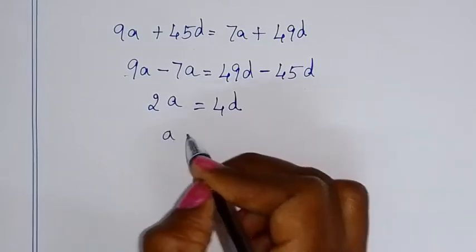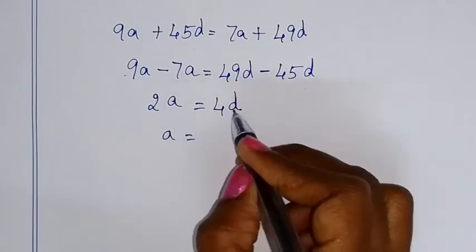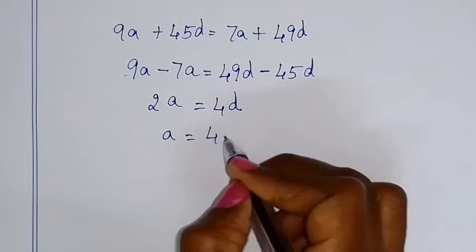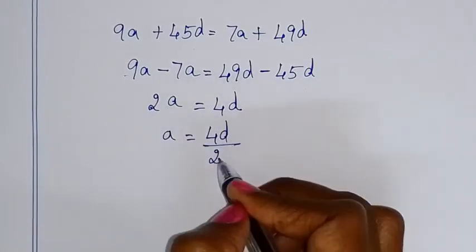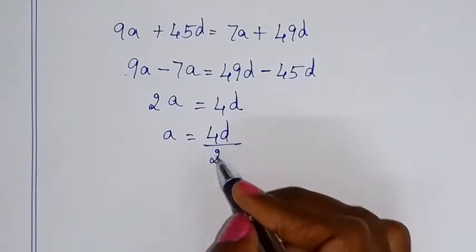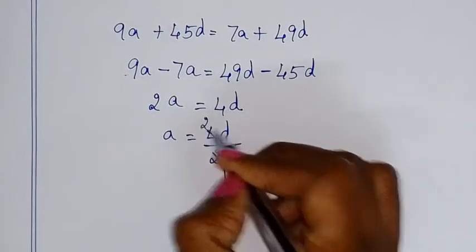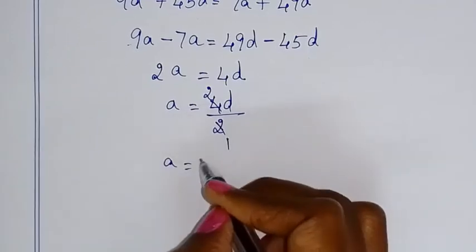When we move A to the other side, multiplication becomes division. So 4D by 2 gives A is equal to 2D.